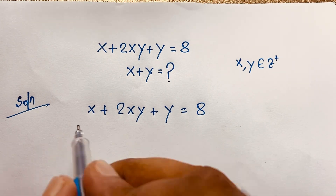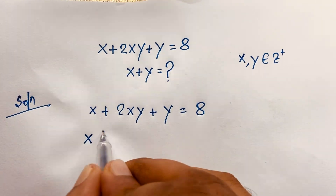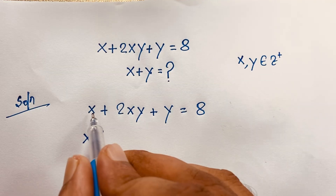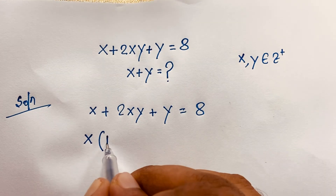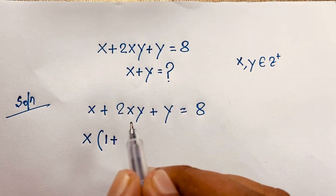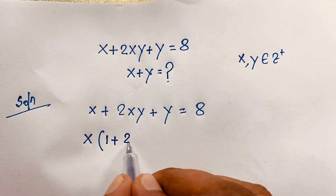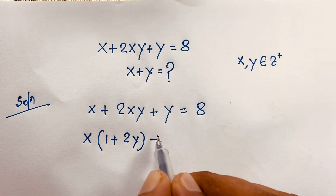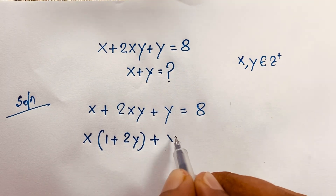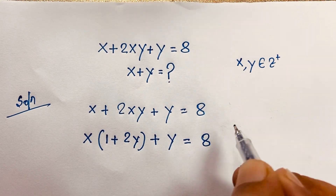First of all, you can see here that x is common. So if I take x as common, x divided by x will be 1, and 2xy divided by x will be 2y. Then here is plus y, equal to 8.